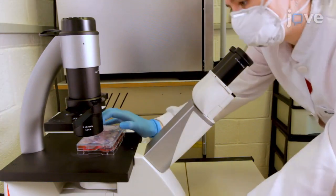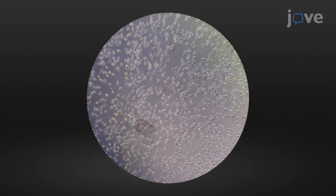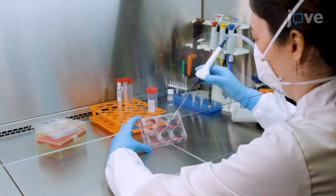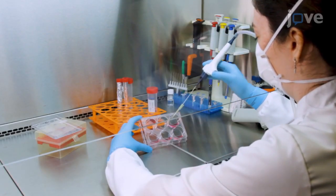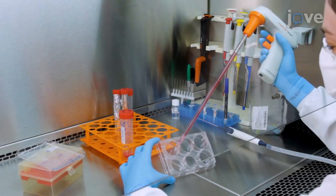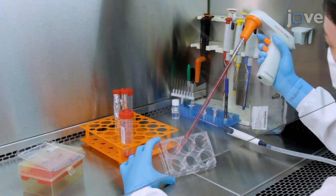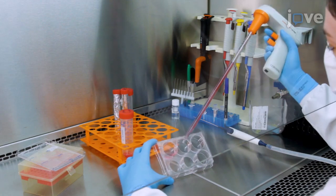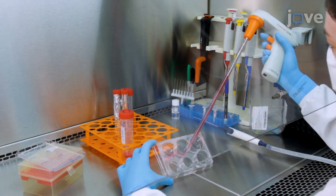After 24 hours, check the confluence and transfect HEC293 stable cells only when 70-80% confluent. Carefully remove the cell culture medium with a pipette, then add 2 mL of complete DMEM medium without antibiotics and put the plate back in the incubator.